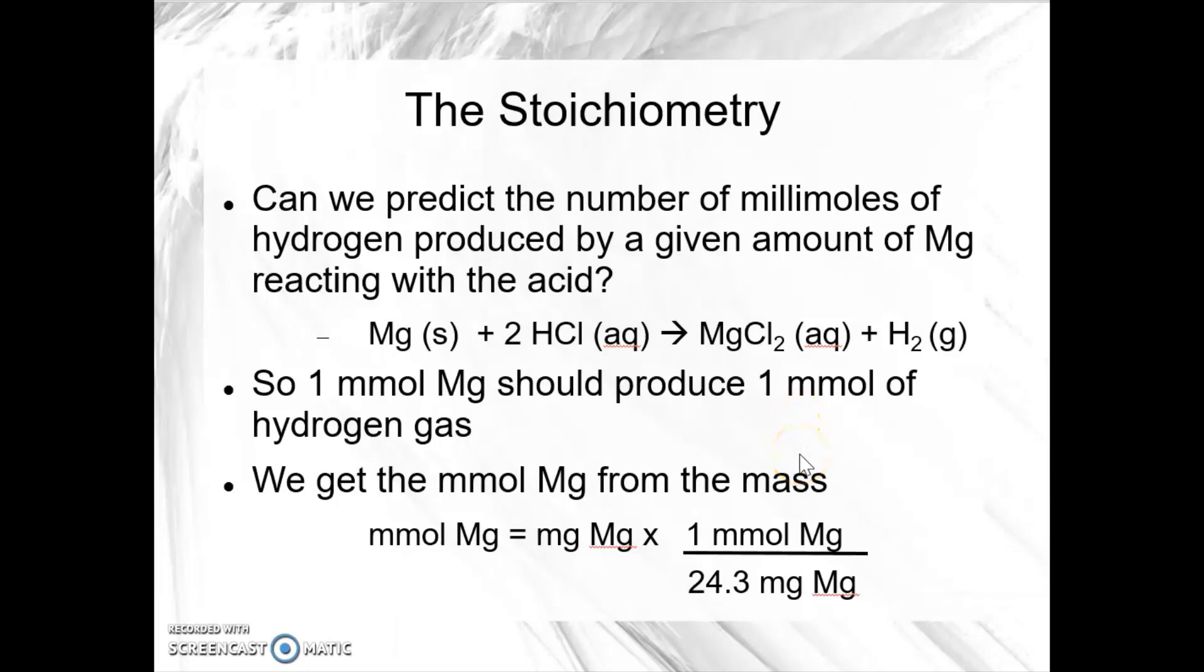So now we know that we had 43 milligrams of magnesium. So we have the number to put into our equation and convert into millimoles. Then we use the BCE to predict the millimoles of hydrogen gas that will be made. And you're going to need that number. So I would go ahead and do that in your lab notebook. Now using 43 milligrams of magnesium, figure out how many millimoles of hydrogen gas you should produce.